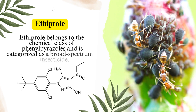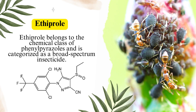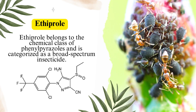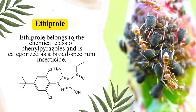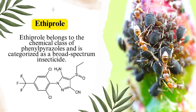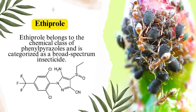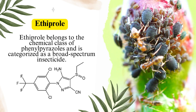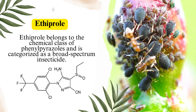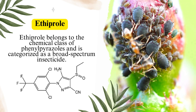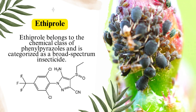Ethiprol. Chemical class and types. Ethiprol belongs to the chemical class of phenylpyrazoles and is categorized as a broad-spectrum insecticide.